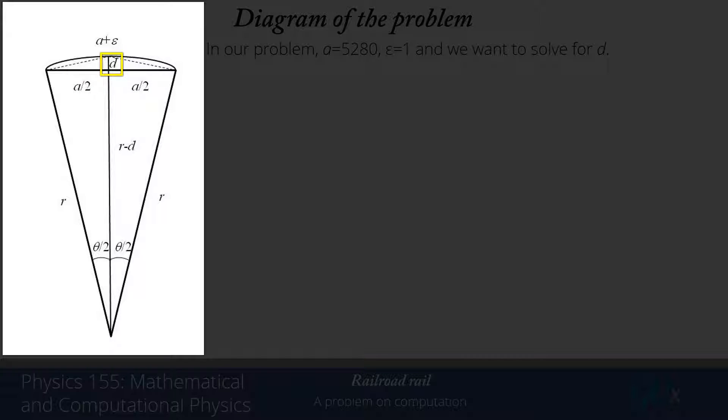And D, the amount that it's bowed up from the surface, that's the quantity that we're trying to get. D is right there in the upper part.